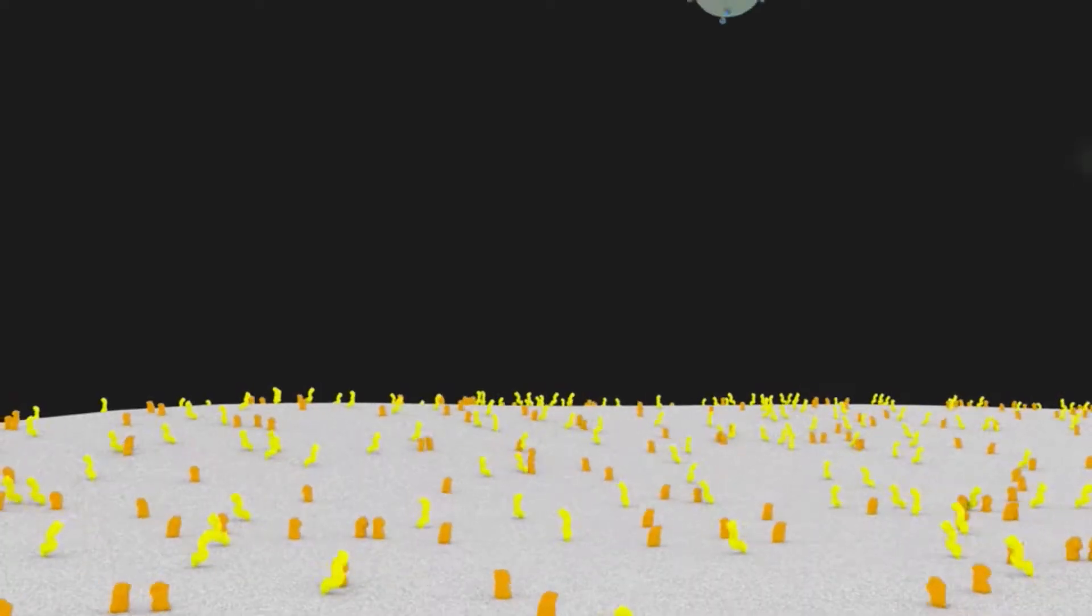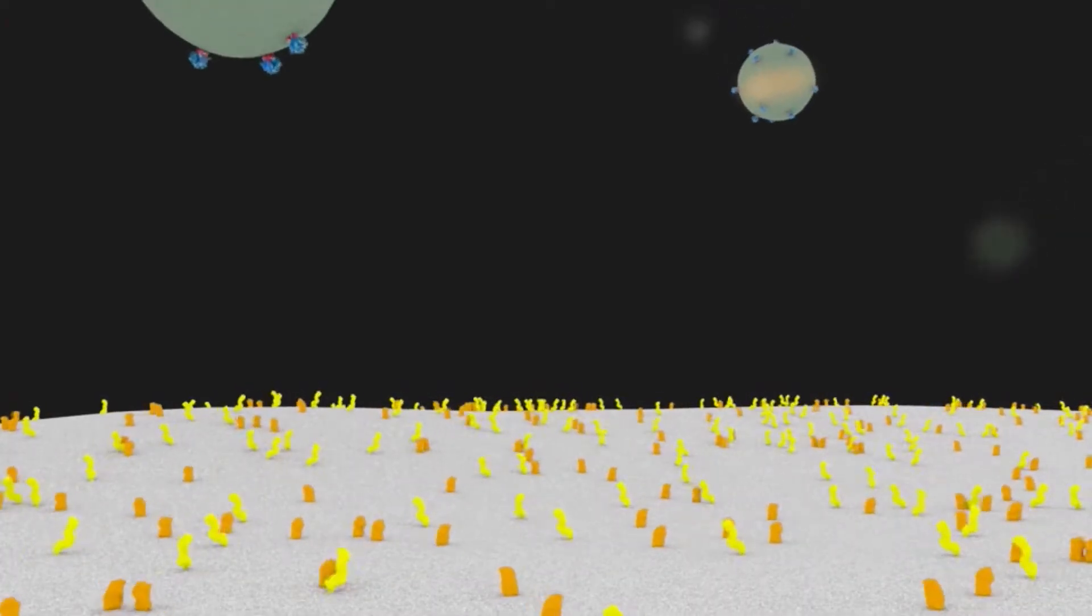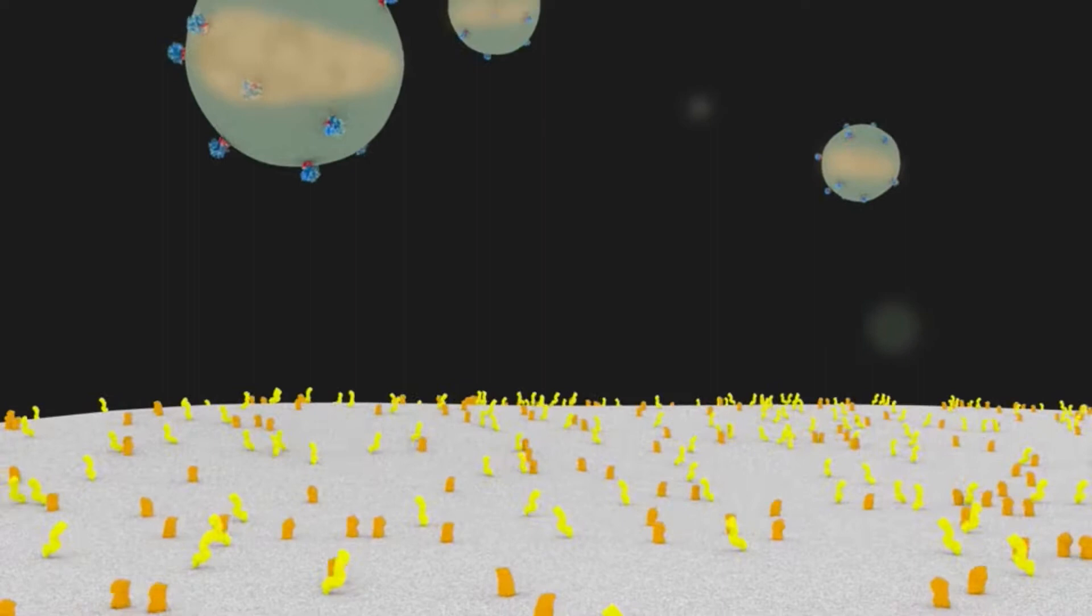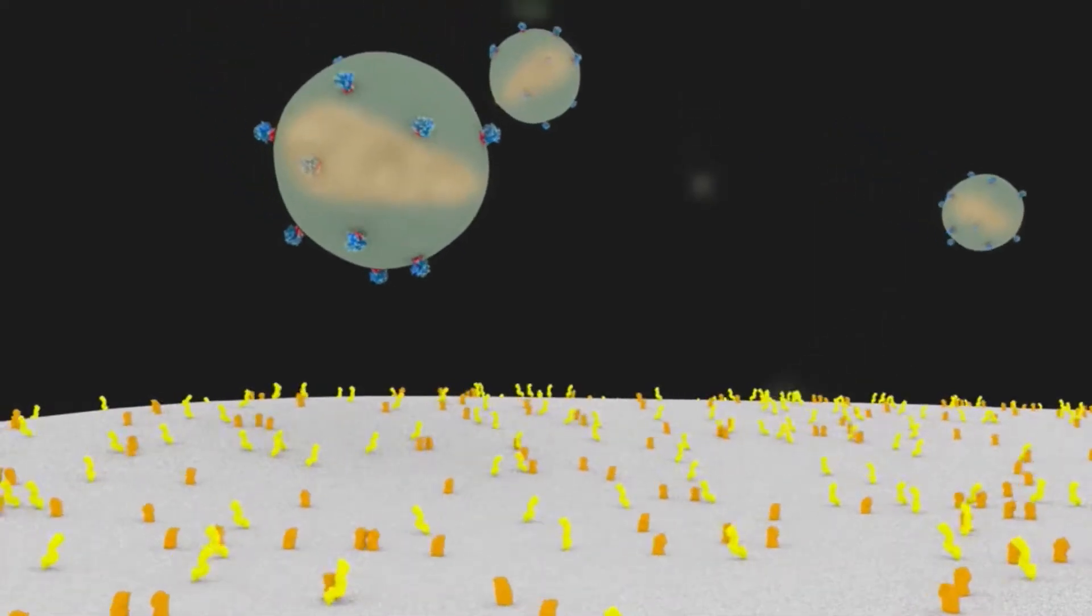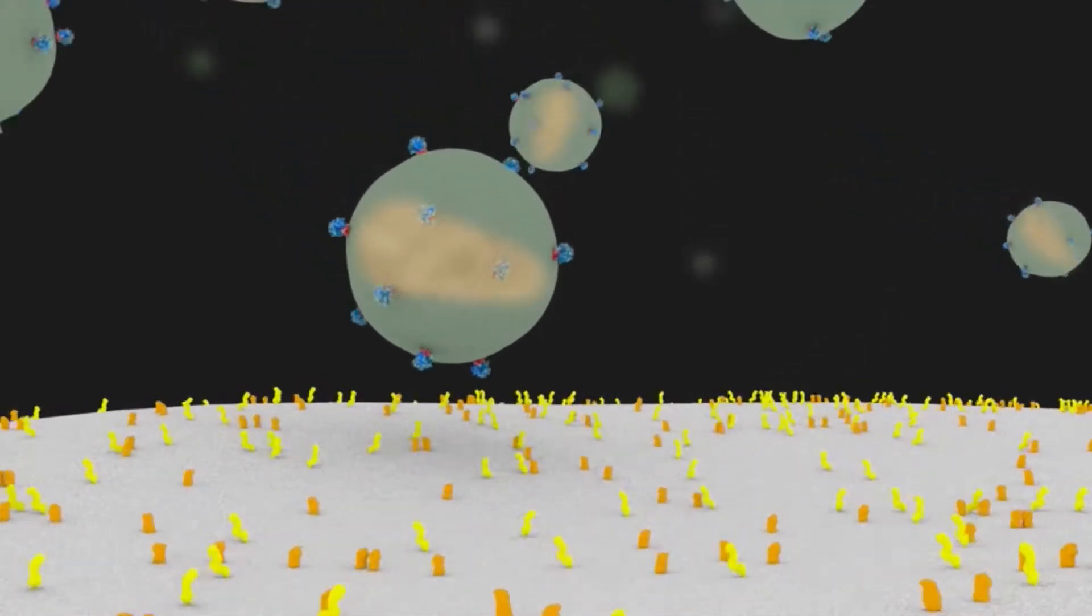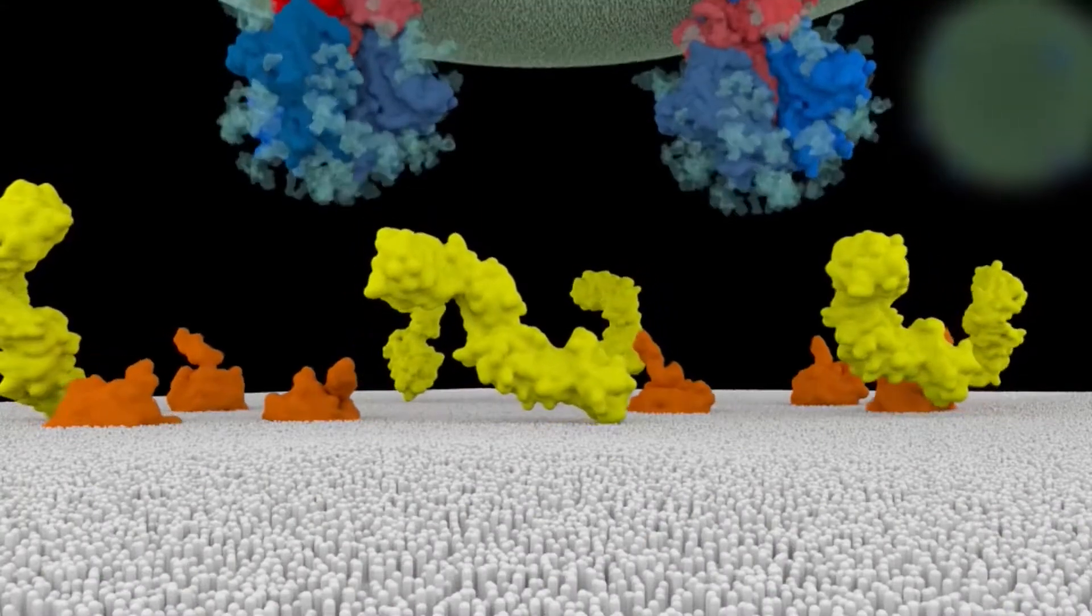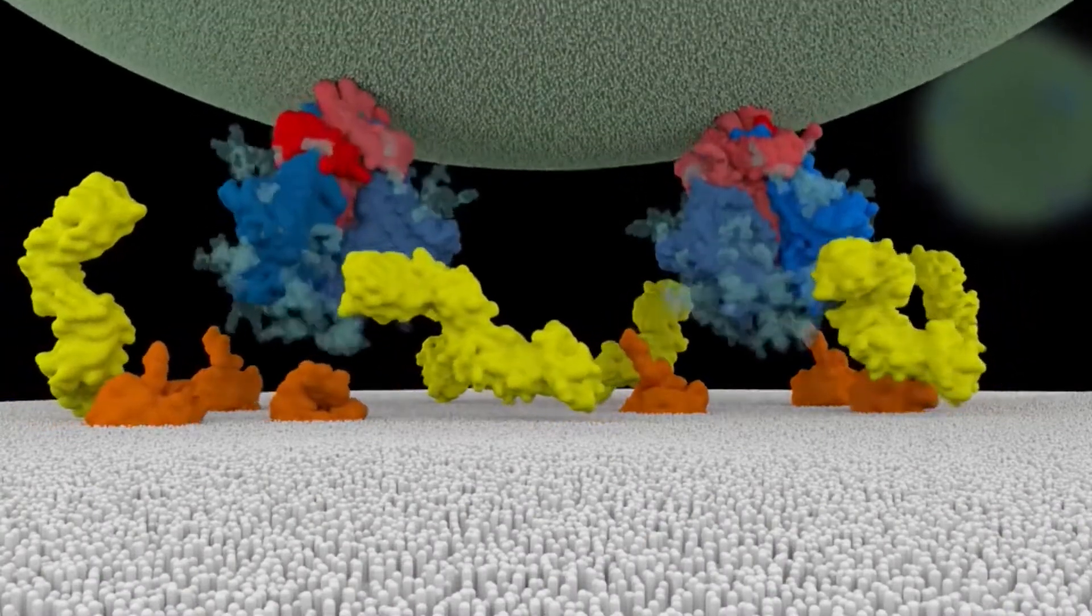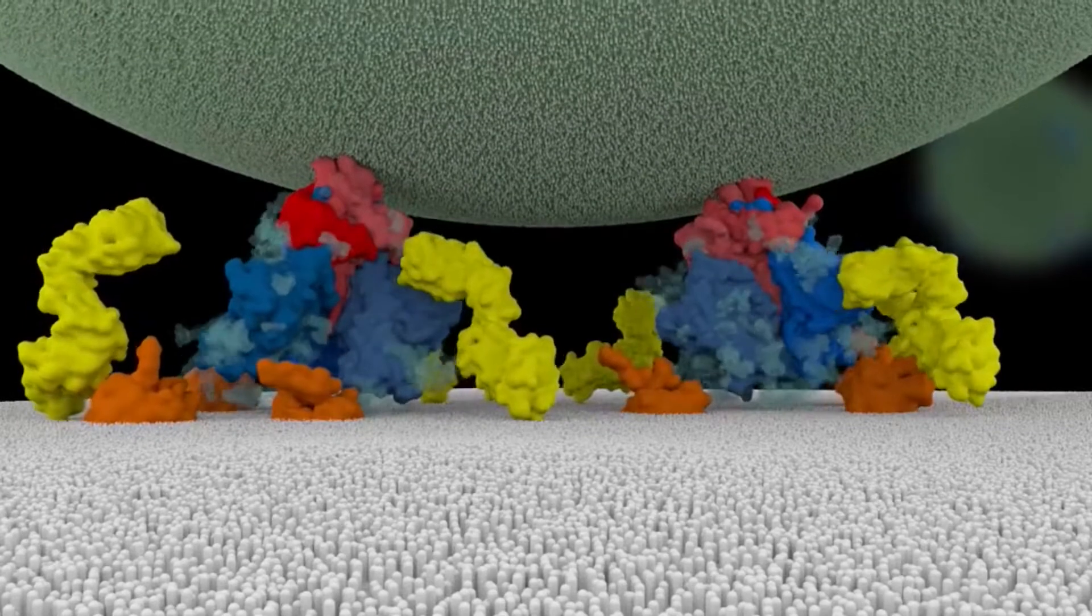The virus first contacts T cells through interactions between the viral envelope proteins and membrane proteins on the T cell surface. Initial binding occurs through CD4 proteins, shown here in yellow.